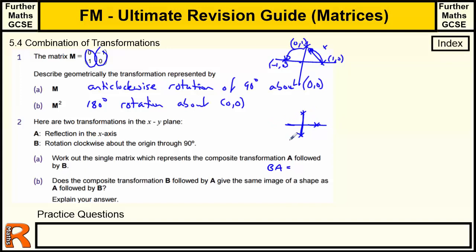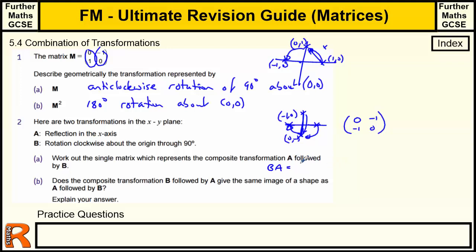The point (0,1) reflects down to (0,−1) under reflection in the x-axis. Then rotating 90 degrees clockwise: (1,0) moves down to (0,−1), and (0,−1) moves to (−1,0). So after A then B, (1,0) ends at (0,−1) — that's the first column. The point (0,1) goes via (0,−1) then to (−1,0), giving the second column. So our combined matrix has columns (0,−1) and (−1,0).